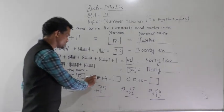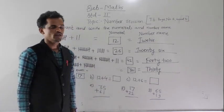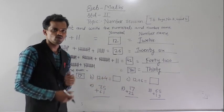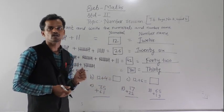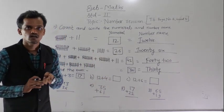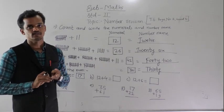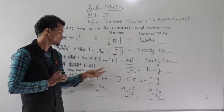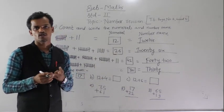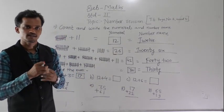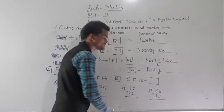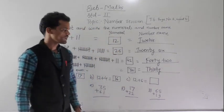Next: 12 plus 4. Add 4 into 12 by counting 4 fingers forward from 12: 13, 14, 15, 16. So 12 plus 4 equals 16.